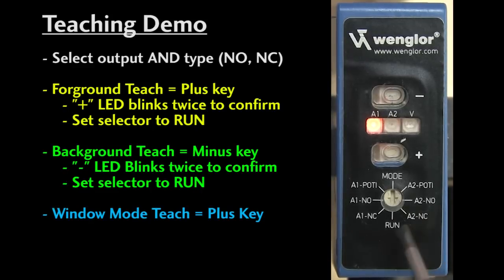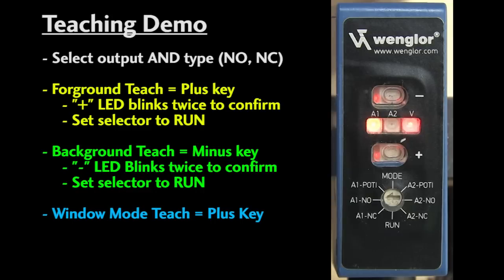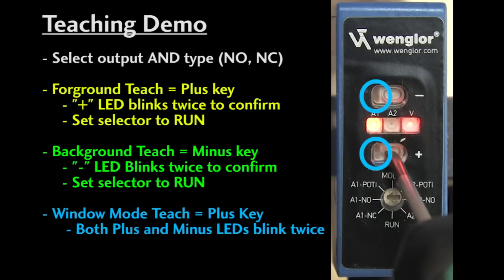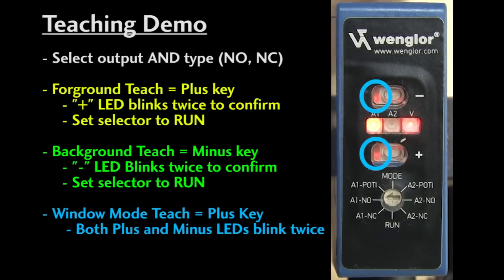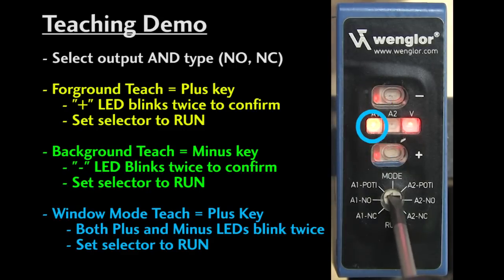We left output pin 1 in window mode. To teach that, set the object where you want the center of the window to be. Press the plus key. When both plus and minus LEDs blink twice – like this – window teach is done. Set the selector back to run. Now the sensor will only detect objects within a window around that midpoint.